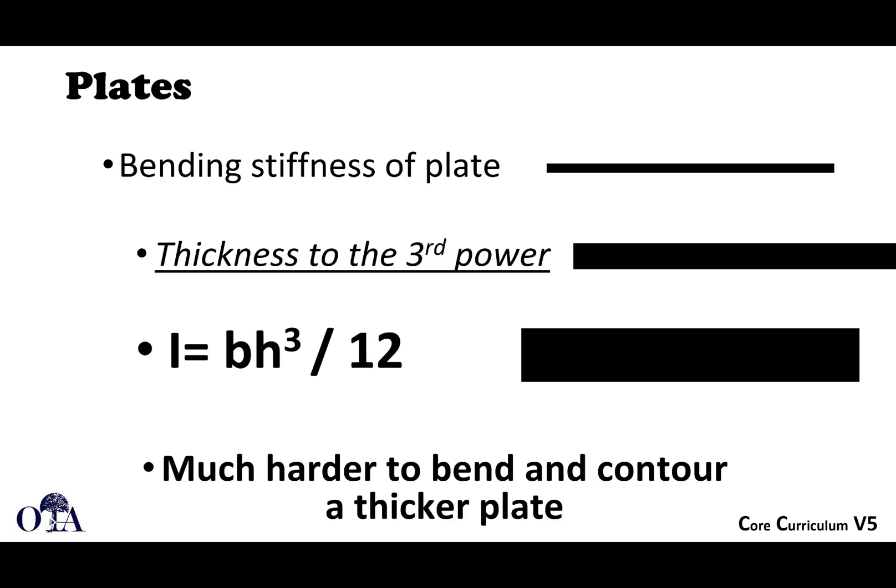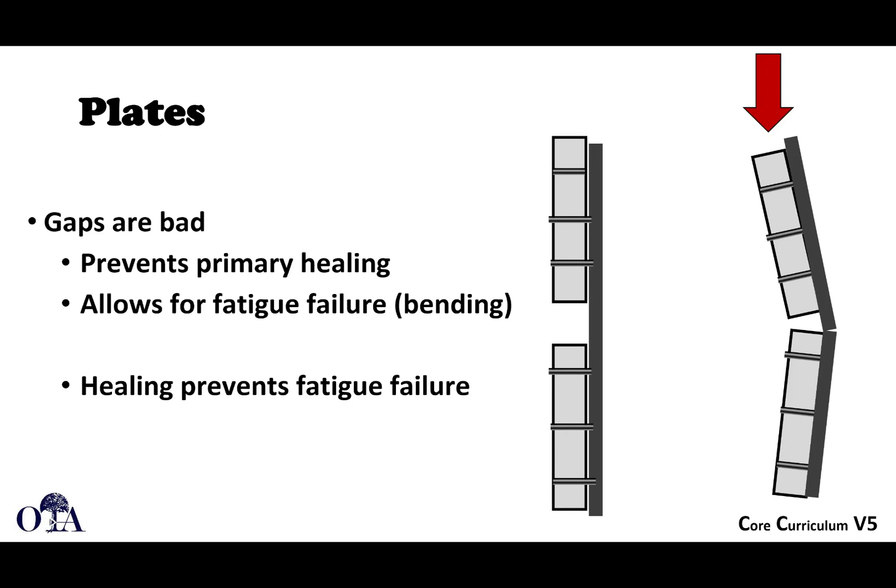Plate bending stiffness is affected by plate thickness to the third power. Small fragment plates that go with 3.5mm screws can often be bent with handheld benders, whereas a 4.5 plate requires a tabletop bending press. Fracture gaps are problematic because they prevent primary bone healing and allow fatigue failure. Bone contact improves stability, and without it you are working against bone healing — if healing doesn't occur fast enough, the implant can fatigue.